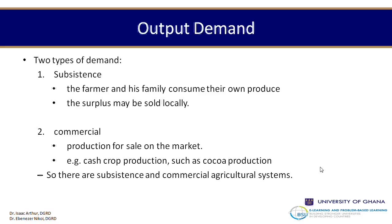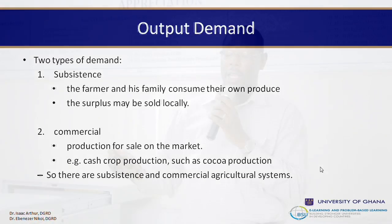When talking about types of demand, we can look at subsistence and commercial farming. The general understanding of subsistence farming is that people consume what they eat — largely because they wouldn't have surplus, and even if they had surplus it would be sold locally in very small amounts. Commercial farming involves producing these products and selling them on the market. Examples include cash crop production such as cocoa — in Ghana we are ranked number two in the world in cocoa production. So output demand is classified in terms of subsistence, commercial, and cultural systems.